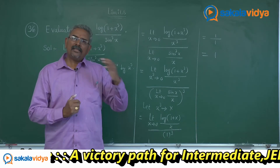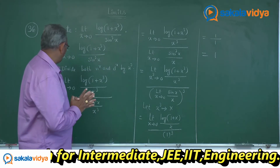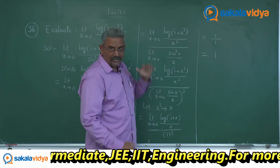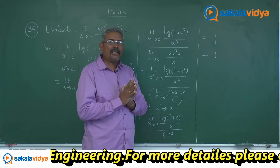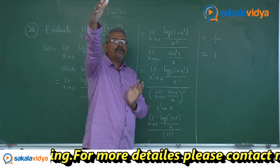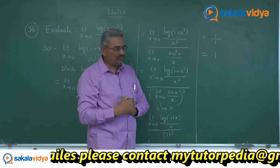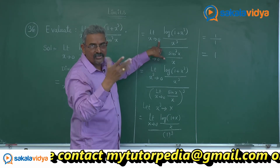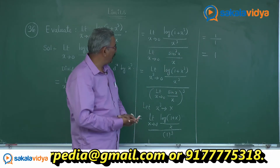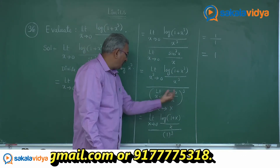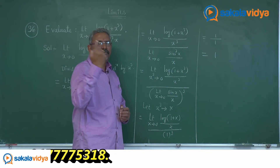We can explain that limit x tends to 0 of log of 1 plus x cube by x cube, divided by x cube. As x tends to 0, x cube also tends to 0, so limit x cube tends to 0 of log of 1 plus x cube by x cube. And for the denominator, limit x approaches to 0 of sin x by x cubed — this is simply limit theta tends to 0 of sin theta by theta, which equals 1, and so the final answer is 1.